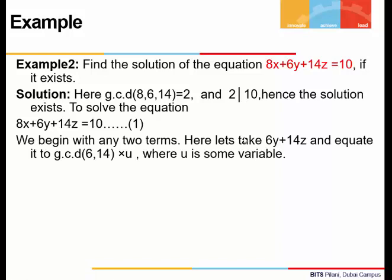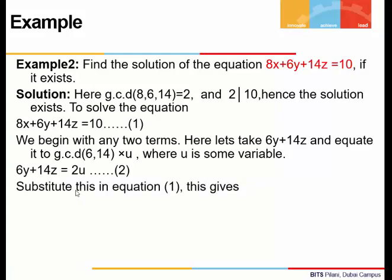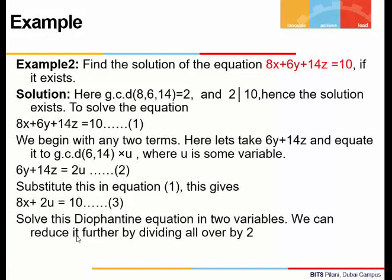Now, to solve the equation, we take any two terms to start with — either 8x + 6y, or 6y + 14z, or 14z + 8x — and equate it to the gcd of those coefficients times a new variable u. If we take the two terms 6y and 14z and equate to gcd(6, 14) times u, we get 6y + 14z = 2u. Substituting into equation 1 gives 8x + 2u = 10, reducing it to an equation in two variables.